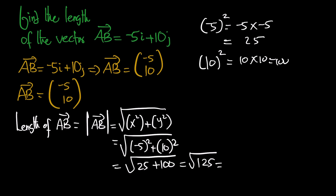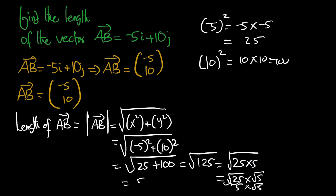Square root of 125 is the same as square root of 25 times 5, which equals square root of 25 times square root of 5. Square root of 25 is 5, so the answer is 5 square root of 5.